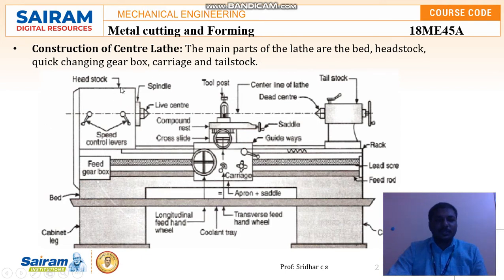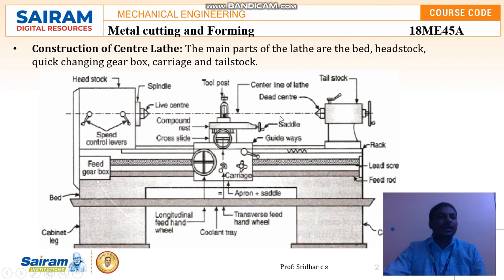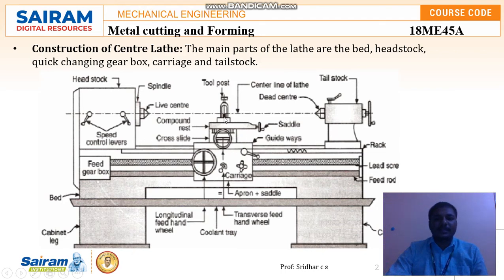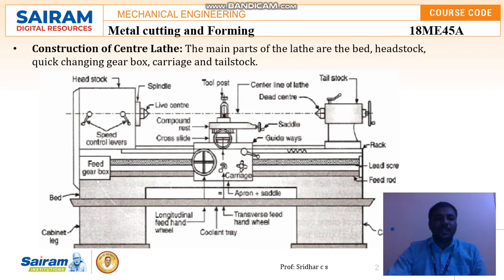The headstock is connected to the lathe center. Through the cross slide we can move and fix the workpiece between the headstock and the tailstock. The tool post is where we fix the cutting tool. The workpiece is fixed between the live center and the dead center. The carriage can rotate either towards the right or left. The saddle allows rotation for the tool post and tool holder used in the machining process.